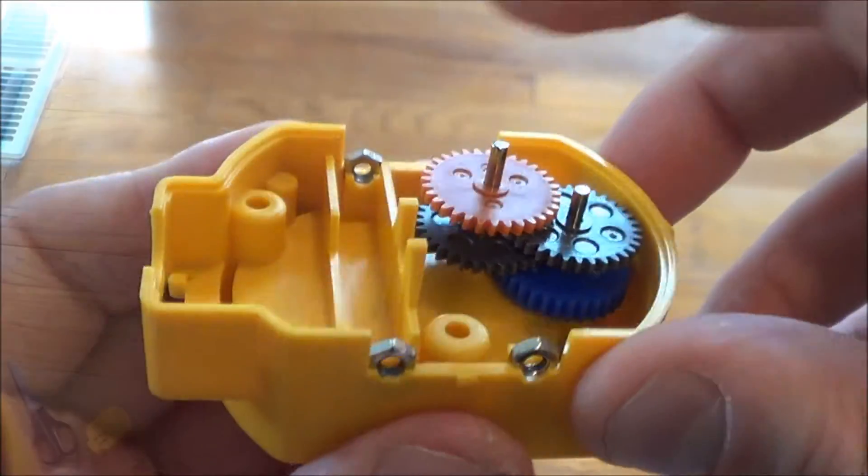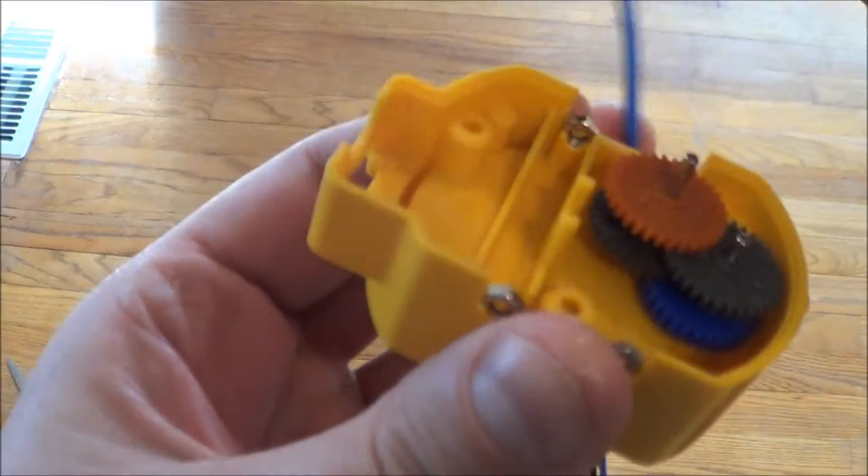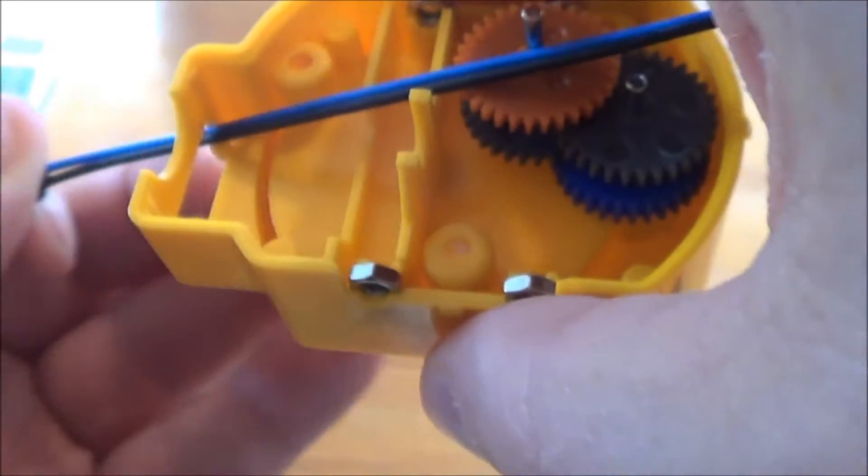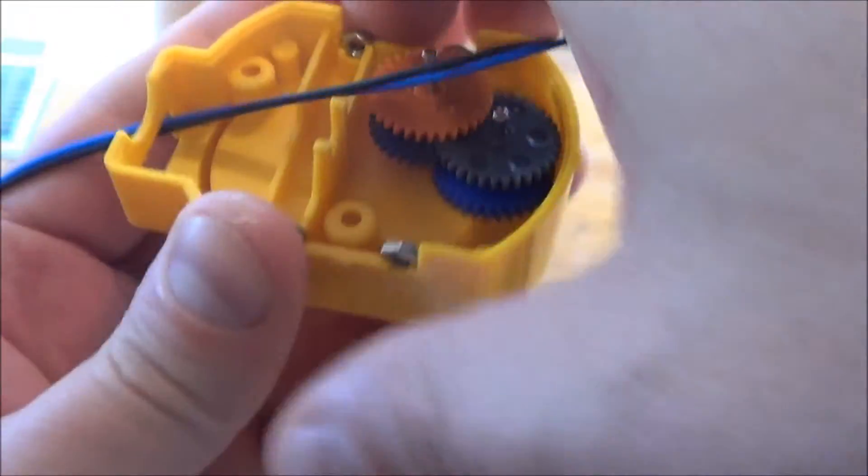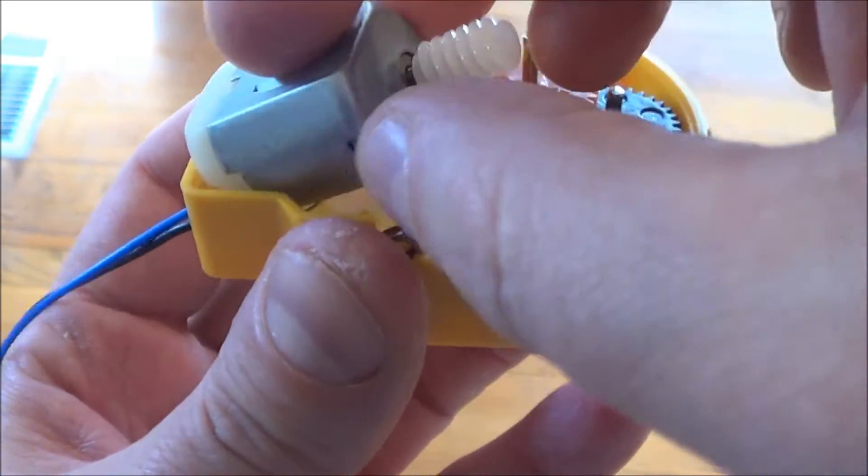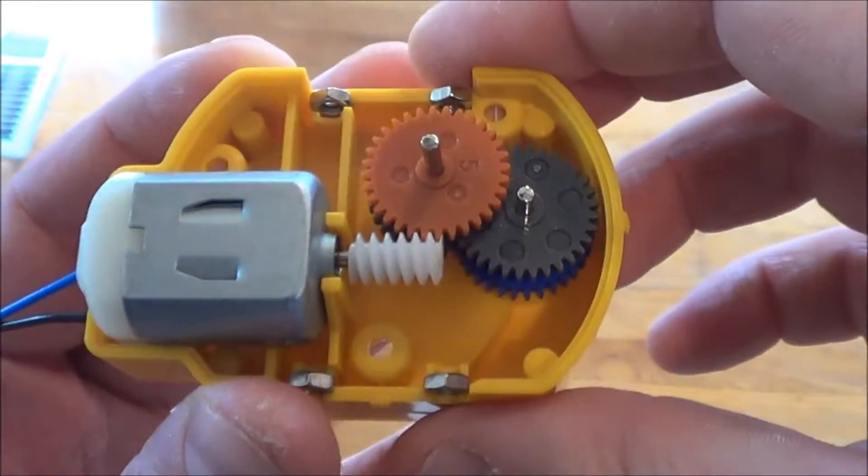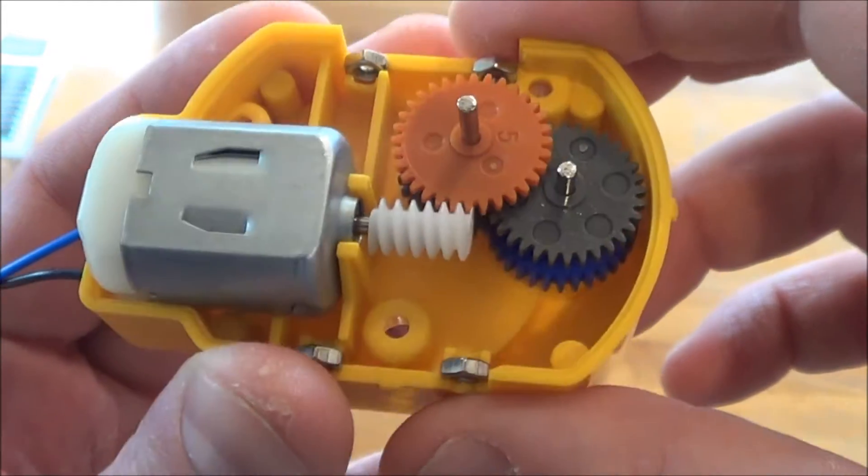Next we're going to put in the motor. There are four motors - two of them are different colors. I put this wire through here like that. There's a capacitor on this side, so I just make sure that's facing the right way and it just snaps in. You can see how it meshes with the gears - that's what's going to run the gears.